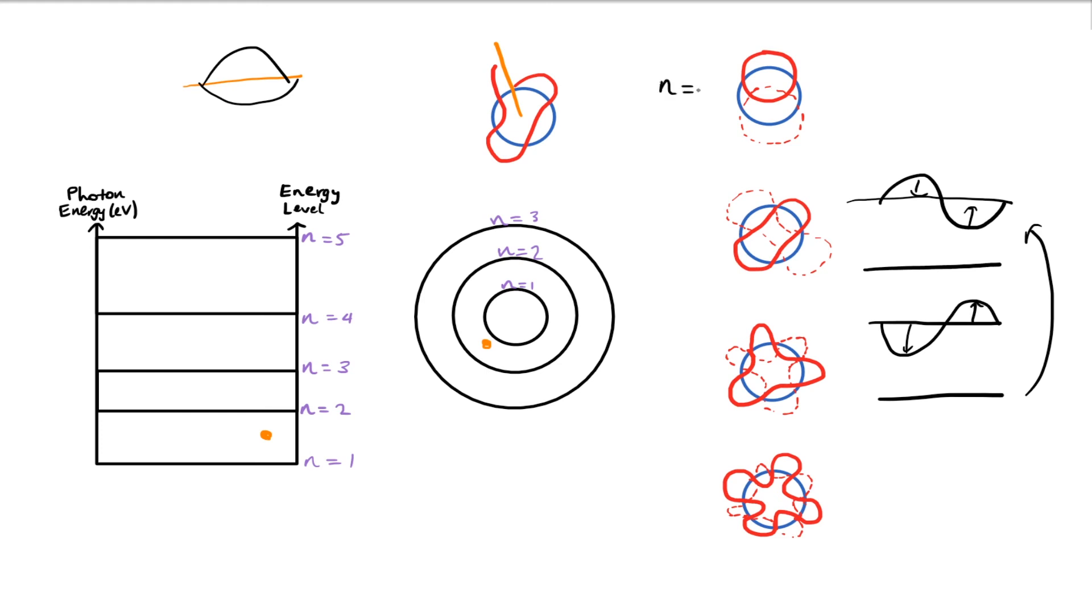So let's just look at what this means with reference to the pictures. This is the ground state n equals 1, and the circumference of orbit is the wavelength. Exactly one wavelength.